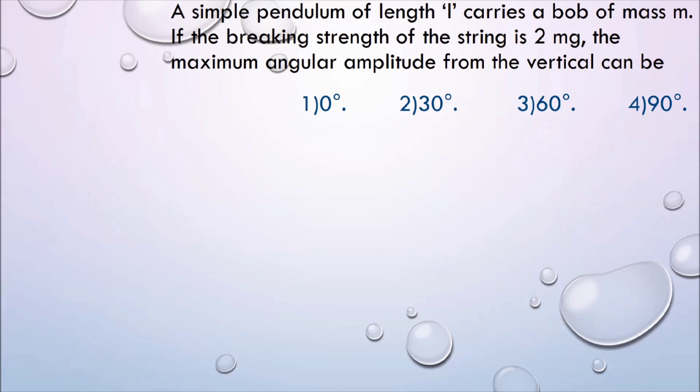First, let us read it. The question is: a simple pendulum of length L carries a bob of mass m. If the breaking strength of the string is 2 mg, the maximum angular amplitude from the vertical can be. The options are 0 degree, 30 degree, 60 degree and 90 degree.